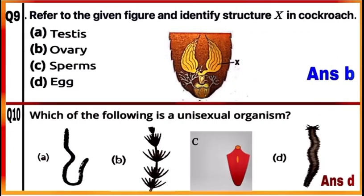Question 9: Refer to the given figure and identify structure X in cockroach. The given figure is of the reproductive system of female cockroach. Here X is identified as ovary. So the correct answer is B.